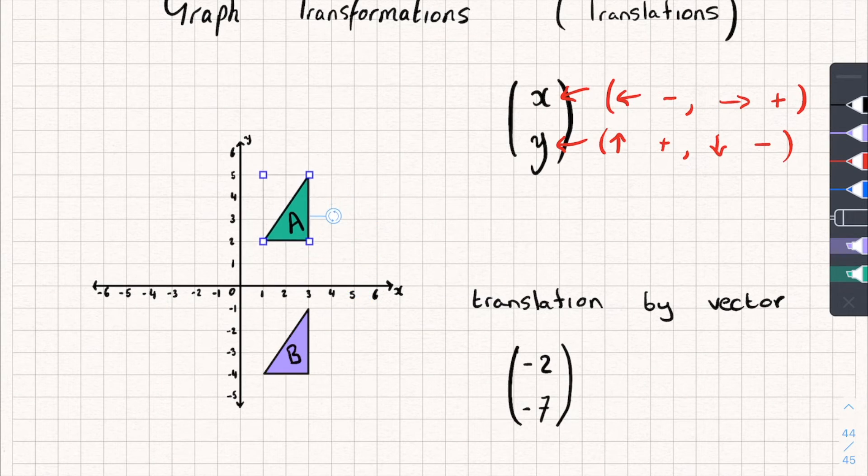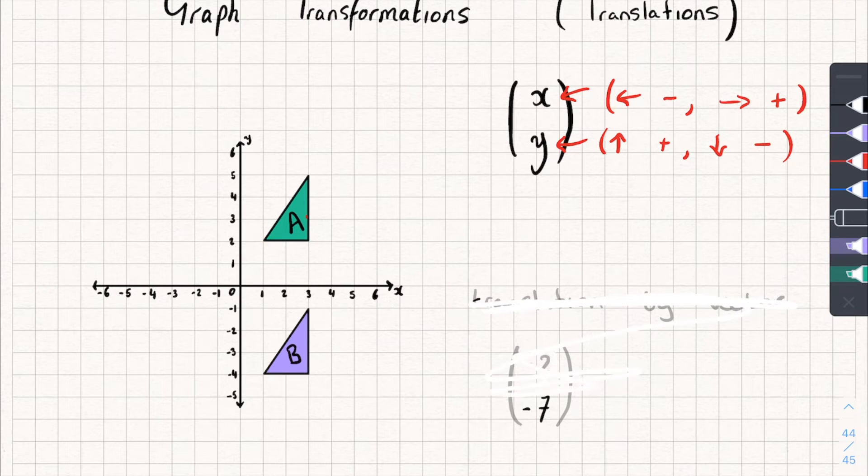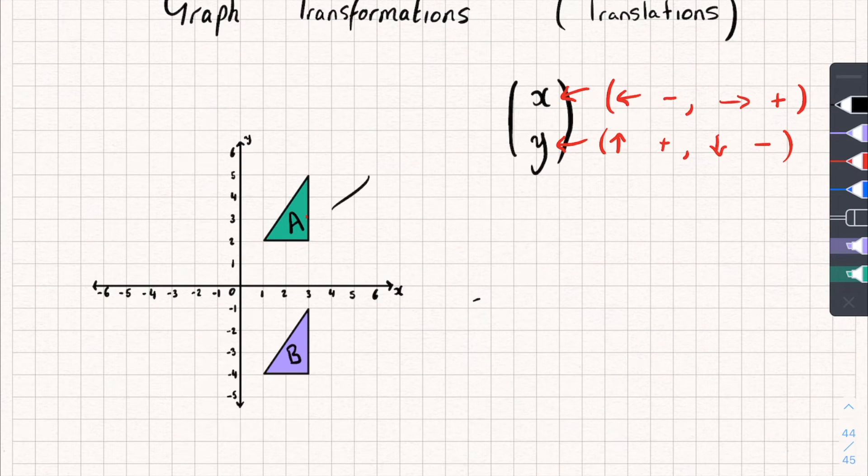Let me do one more example that's going to be slightly different. So it's going to be the same question. Describe the translation that takes you from shape A, which is this one, to shape B. So again, I'm going to say, well, I know immediately that it's a translation. So let me write that in. And it's translated by the vector. Well, let's work it out.